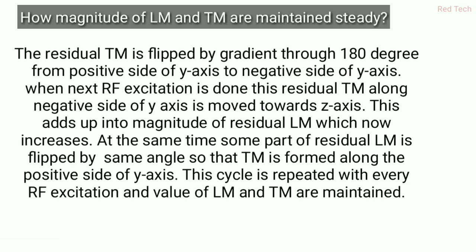Regarding how the magnitudes of LM and TM are maintained: the residual transverse magnetization is flipped by a gradient through 180 degrees, moving it from the positive side of the Y-axis to the negative side. When the next RF excitation is applied, this residual transverse magnetization on the negative side of the axis moves toward the Z-axis and adds up into the residual longitudinal magnetization, increasing it. At the same time, we have both residual transverse magnetization and residual longitudinal magnetization.